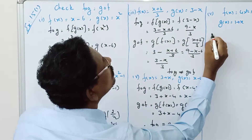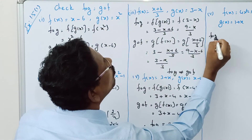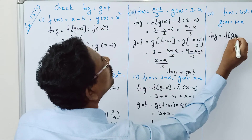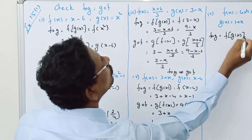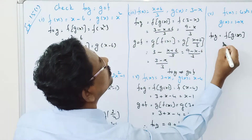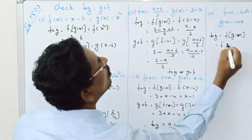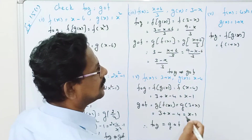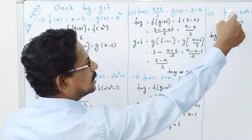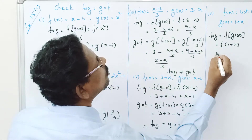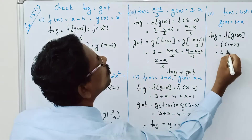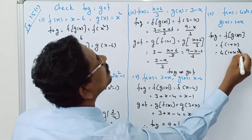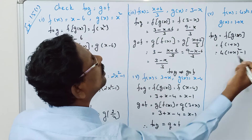F composition G — F of G of X — is equal to F of 1 plus X. Applying F of X equals 4X squared minus 1, that gives 4 times 1 plus X the whole squared, minus 1.